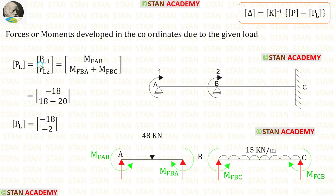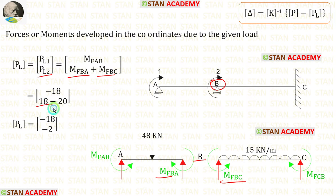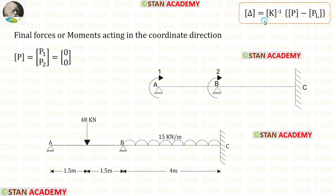First let us find the PL matrix. Inside the PL matrix we have the forces or moments developed at the coordinates due to the given load. For PL1 at coordinate 1 (point A), we apply the fixed end moment M_AB. For PL2 at coordinate 2 (point B), we have two fixed end moments M_BA and M_BC; after adding them we get −2.